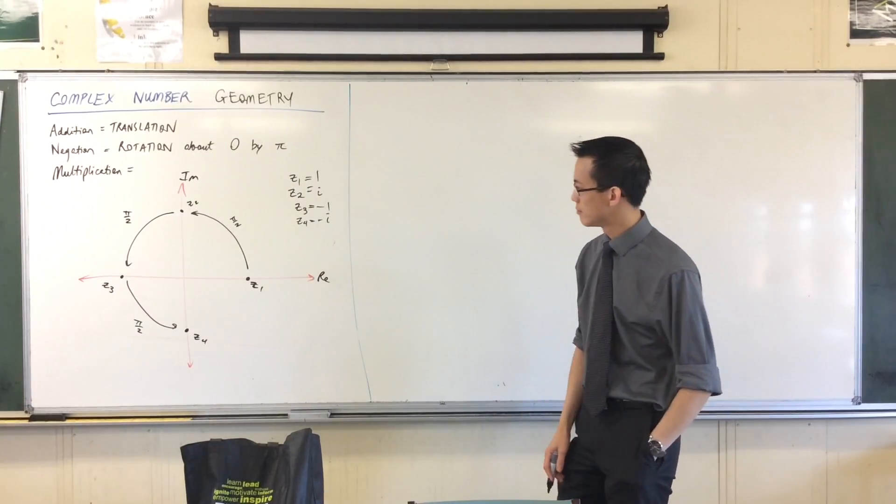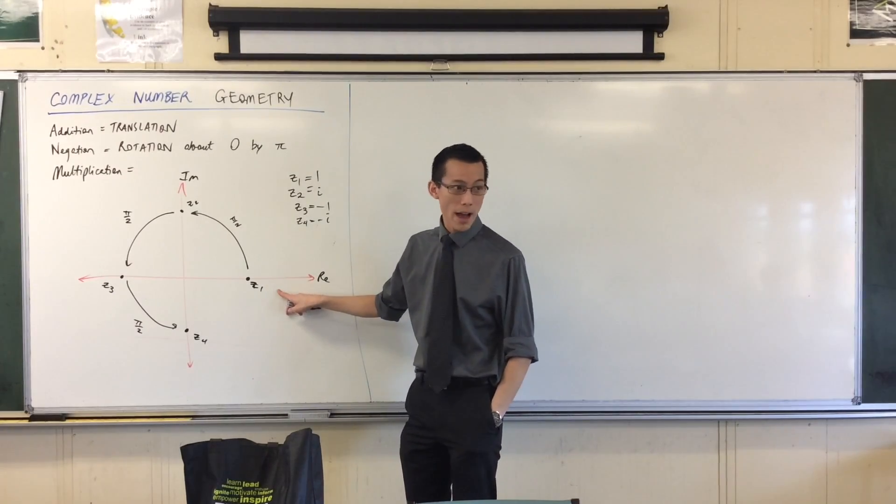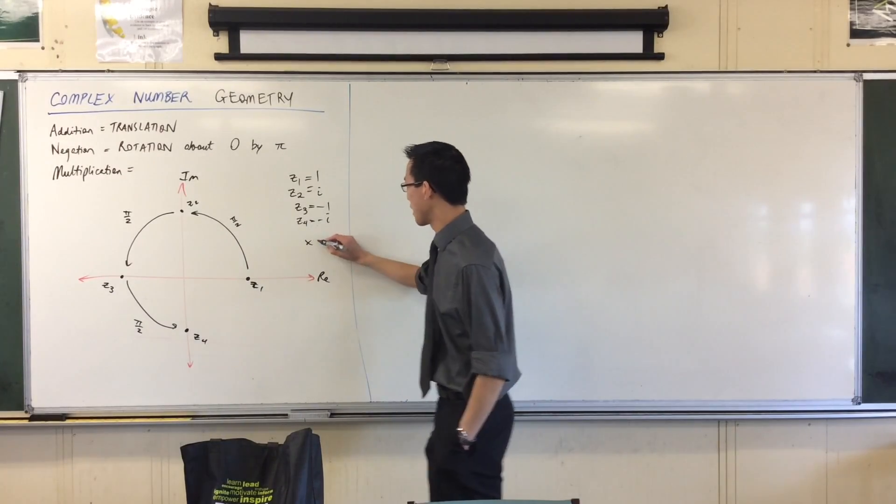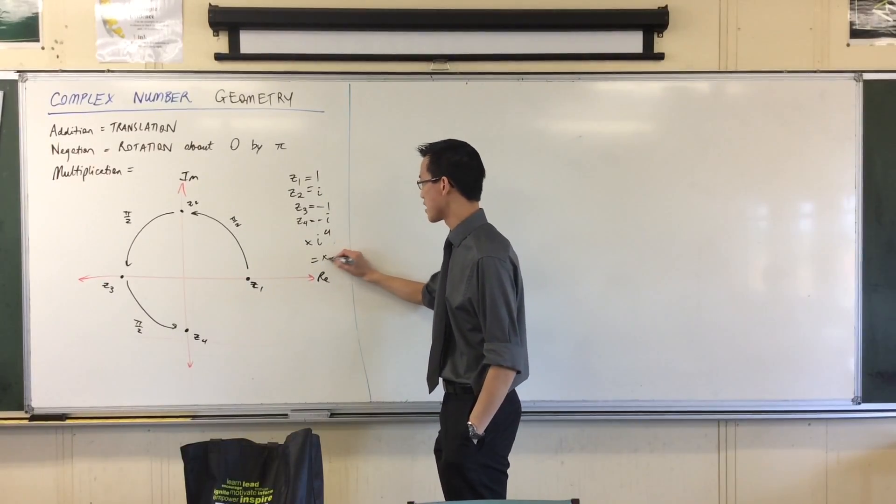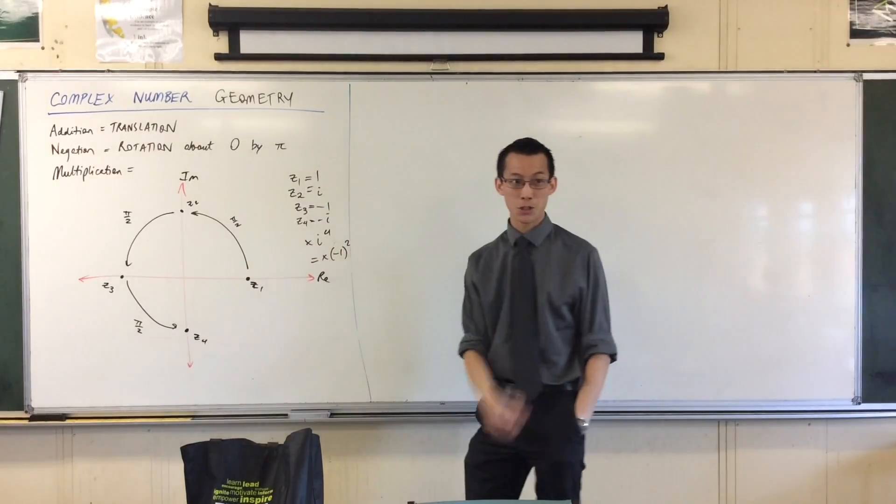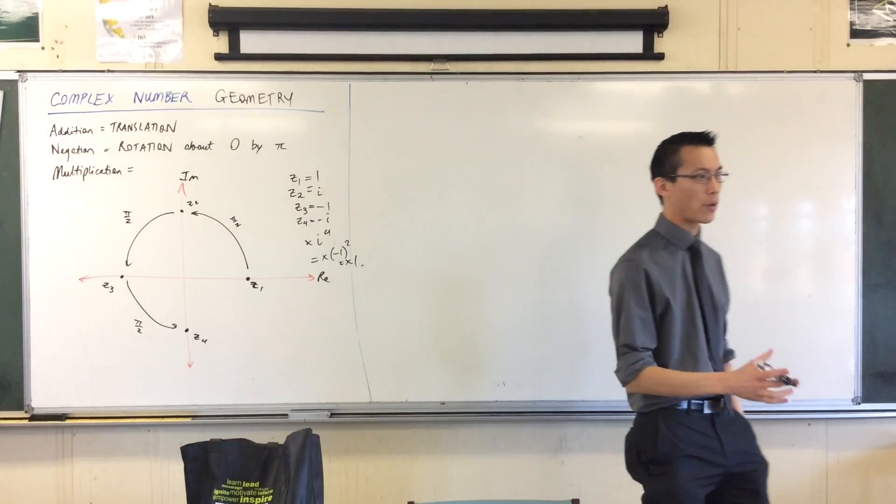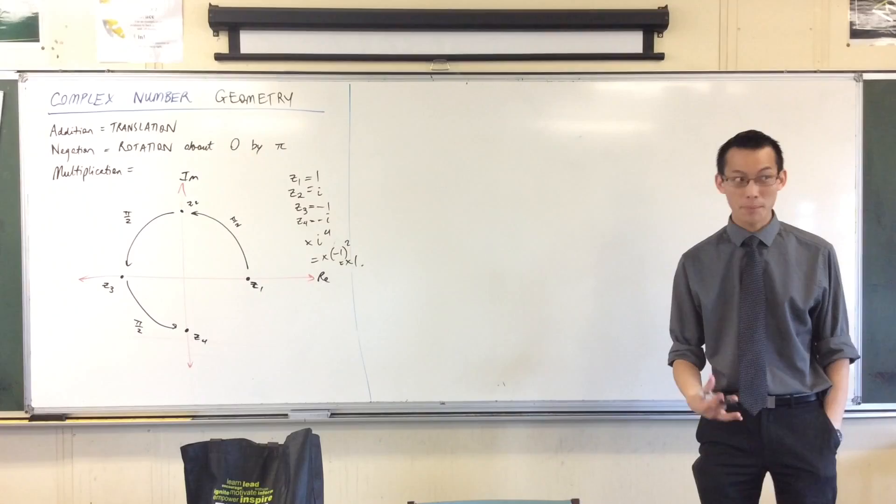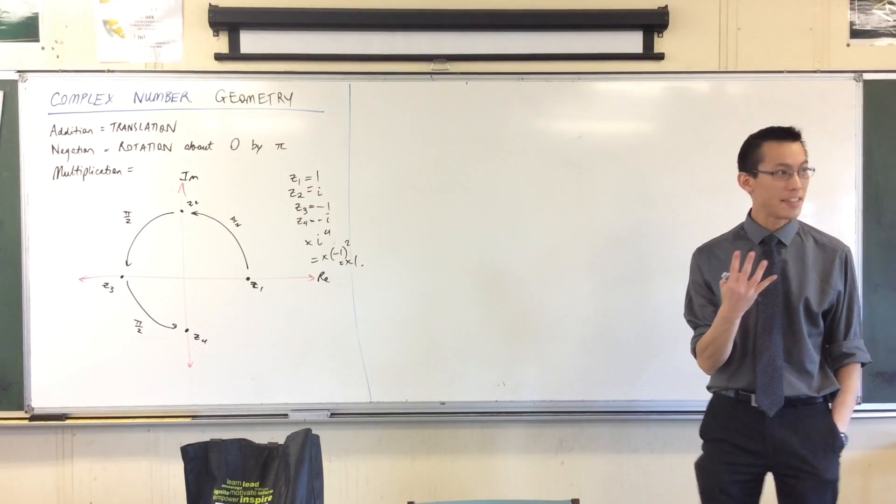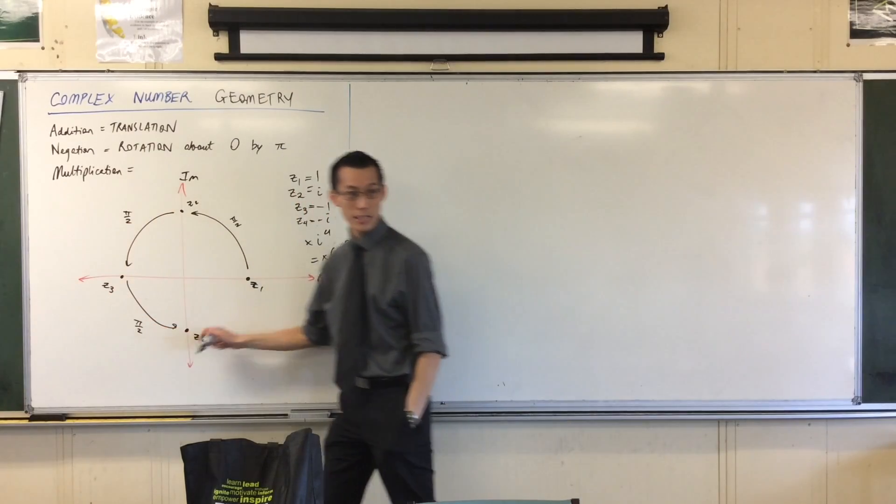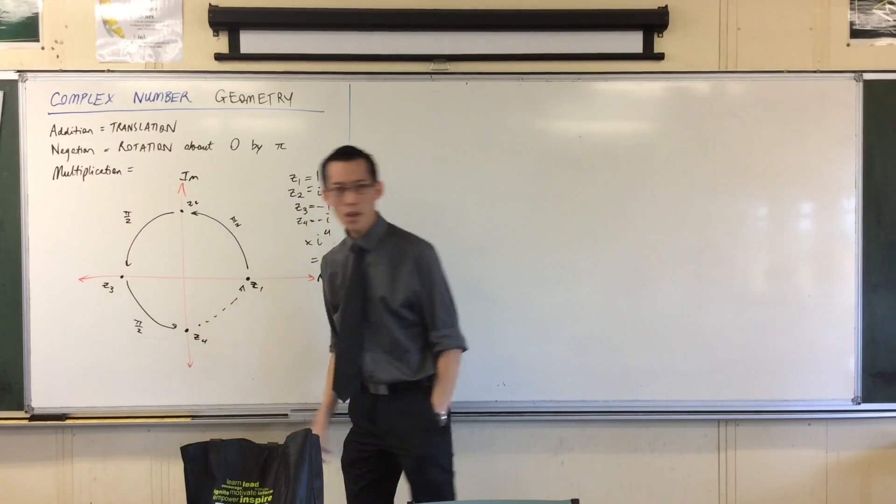Where would Z5 be? Back at Z1. He'd be back here. And the reason why is because multiplying by i four times is the same as multiplying by negative one two times, which is the same as multiplying by one. And it lands you back where you started. What's something you can do four times and you end up back where you began? And the answer is, you rotate pi on 2 radians and you'll get back there.